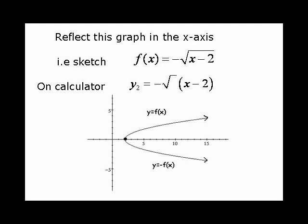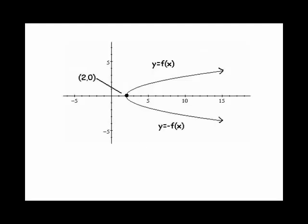I'm going to take note of that point 2 comma 0, because it was on the original curve, and then it's also on the next curve. So 2 comma 0 is what we call an invariant point. It's unchanged under the transformation. So we reflected the curve, and the point 2 comma 0 is still on the curve.